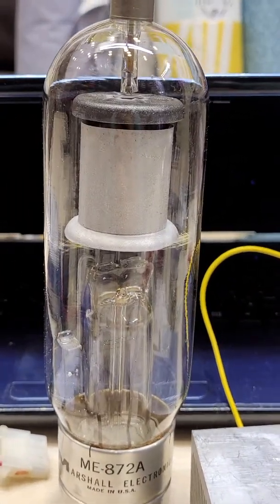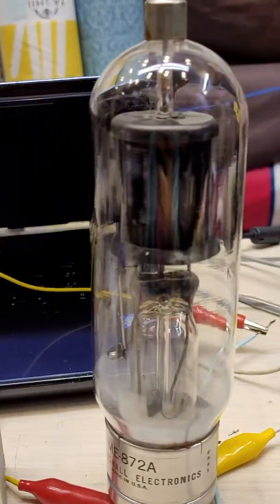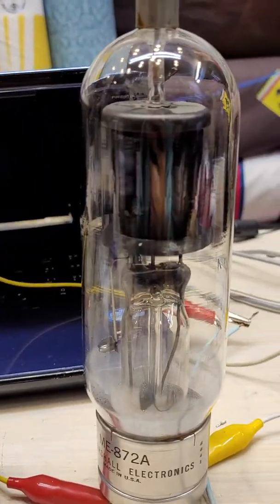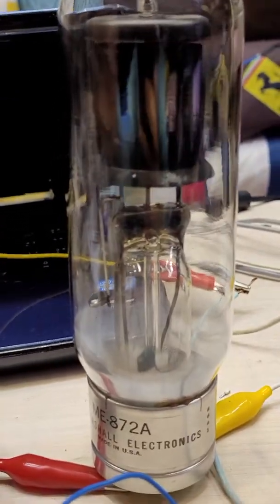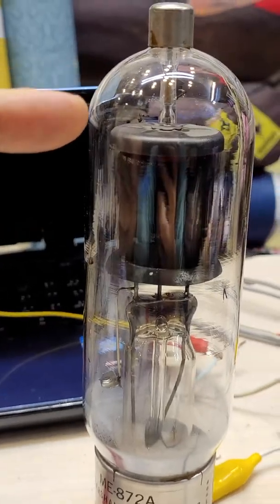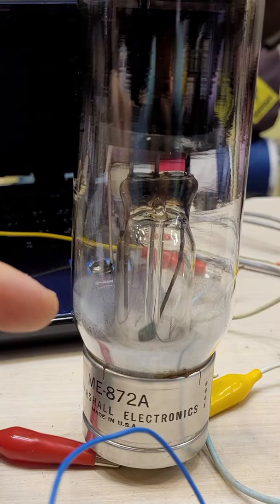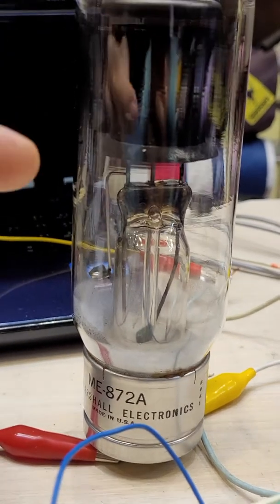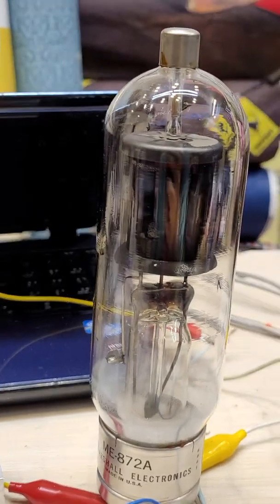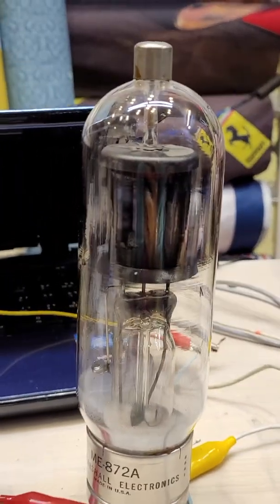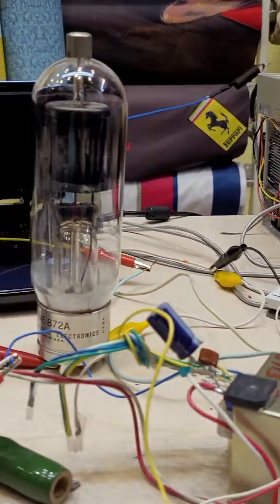I just powered this up. It heats up slowly, and at the beginning it fogs up the top parts. Slowly the fog goes down as the chamber fills up with mercury vapor. This tube is very hot right now. I wanted to demonstrate how it looks when rectifying voltage.